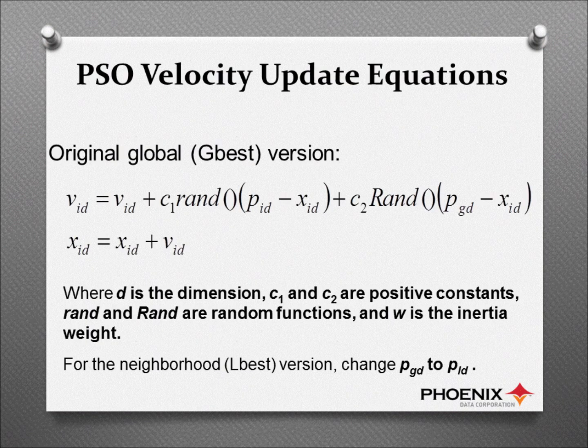Here are the equations — don't choke on these if you're not mathematically inclined. The new velocity is equal to the old velocity, plus a couple of constants C1 and C2, multiplied by a couple of random numbers — a small r and a large R, which are different random numbers. The term P-sub-id minus X-sub-id is the difference between where we are (X-sub-id) and P-best (P-sub-id). On the right, X-sub-id is where we are, and P-sub-gd is global best. These constants turn out to be between 1 and 2, roughly 1.5. We update the velocity, and then we update the position of the particle. That's the entire algorithm — that's all there is.